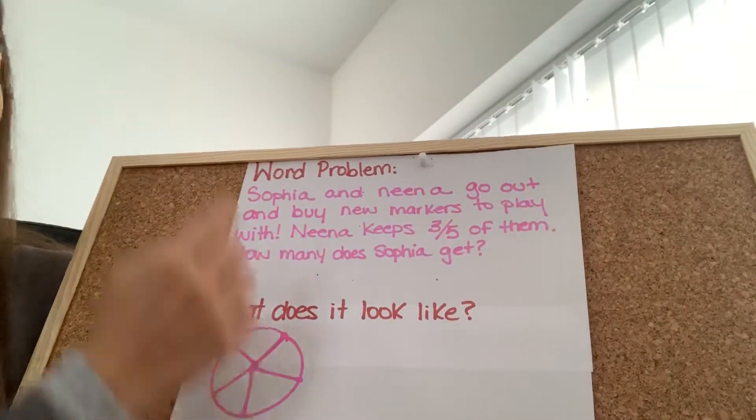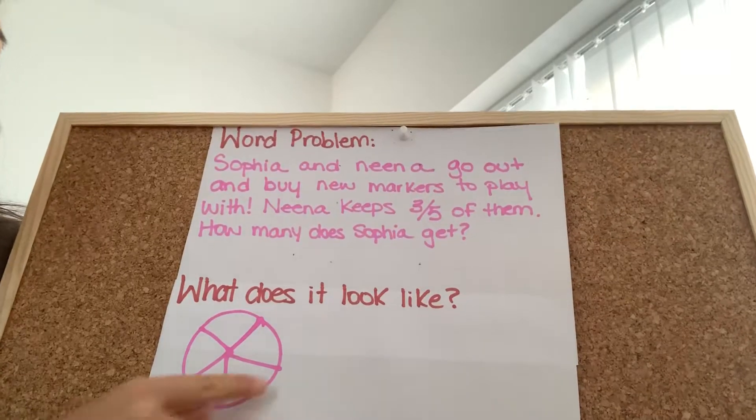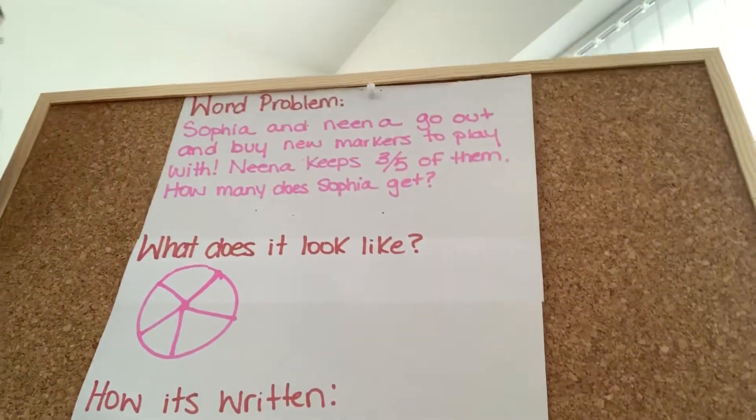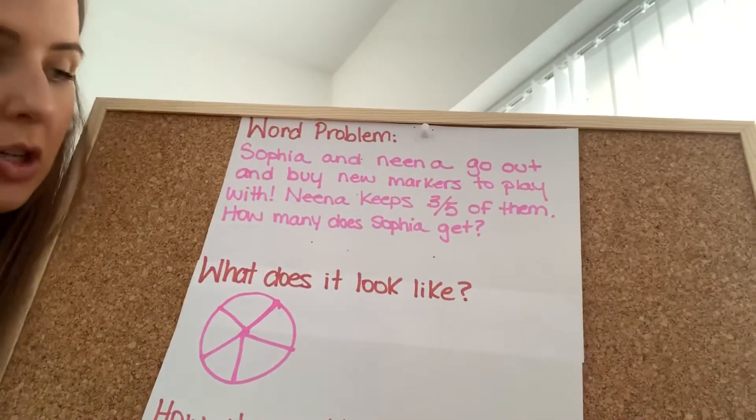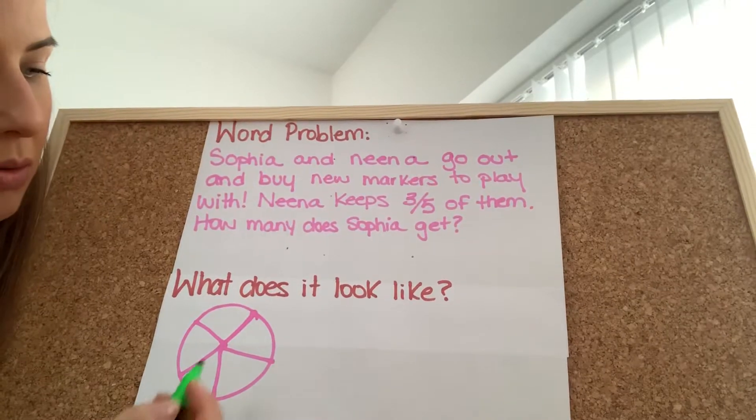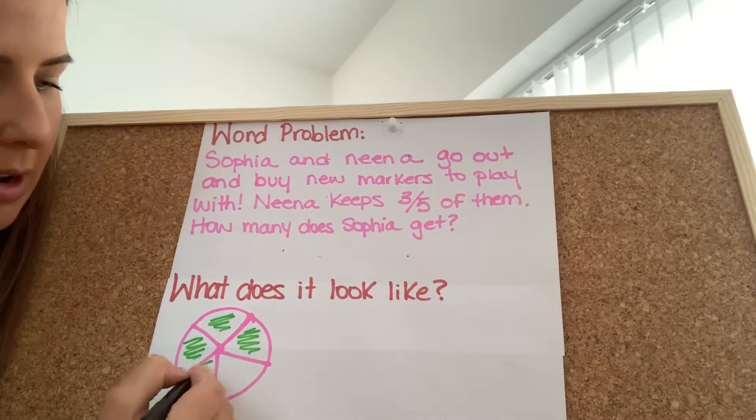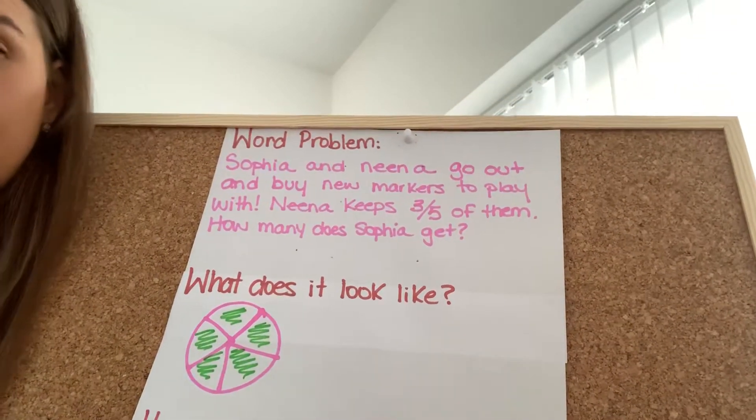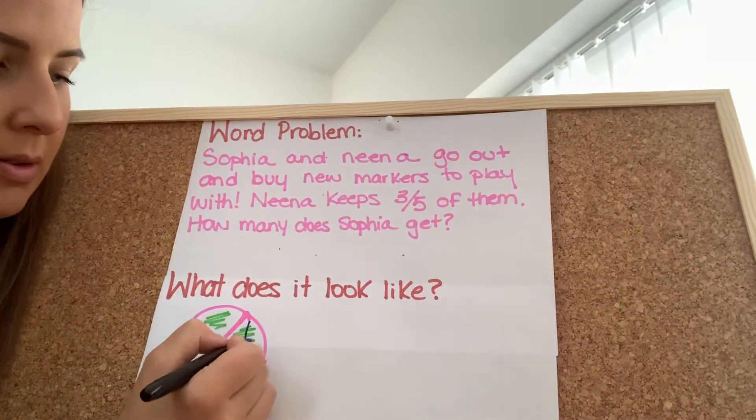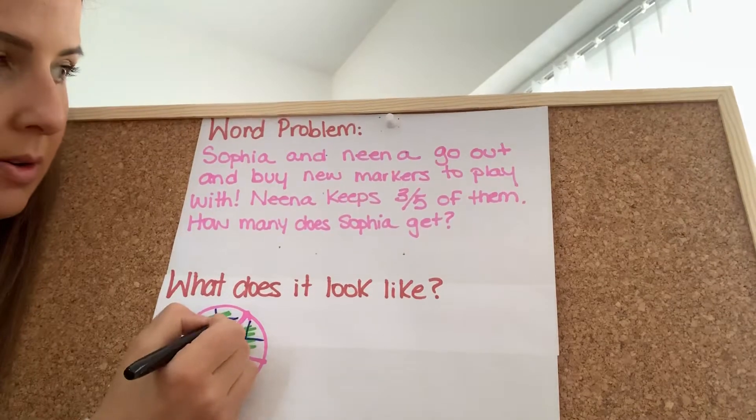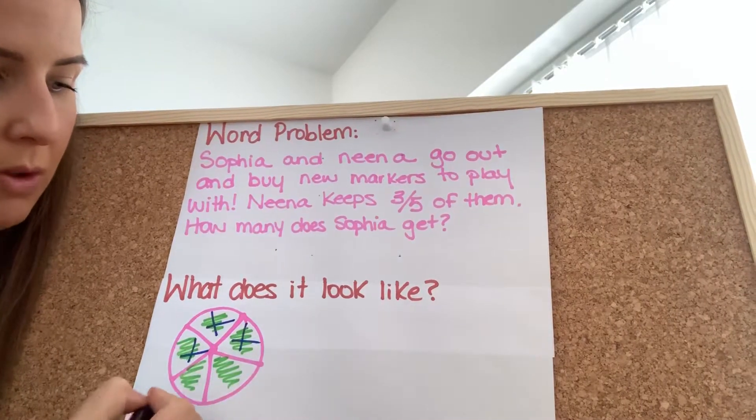So, we know if they've got a whole set of new markers, okay? And Nina keeps three-fifths of them. How much are left? So, let's pretend this is a full set of new markers. Nina's going to take one, two, three-fifths. So, she's going to take three-fifths.